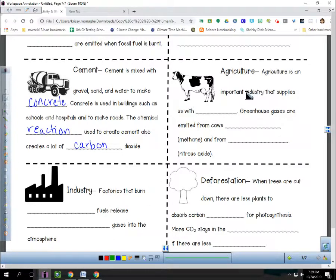And then the last one there, agriculture. Agriculture is an important industry because that's what supplies us with food. But greenhouse gases are emitted from cows through the process of belching and farting, it releases methane. And from their fertilizer, from the actual poo part, we use on our farms, we have nitrous oxide being given off.